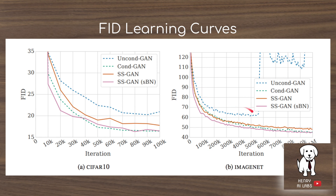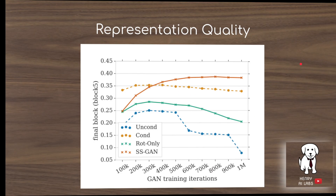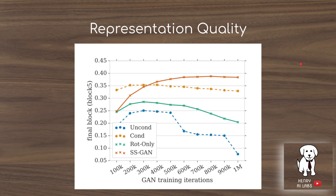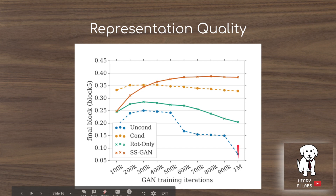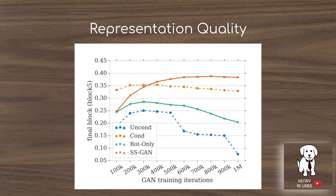On ImageNet you can see how the unconditional GAN collapses — a failure mode resulting in a very high FID score. The rotation quality results show that when you train the GAN and take the discriminator's visual representations to train a classifier, the rotation-only self-supervised approach gets about 20% accuracy, while unconditional does poorly. The conditional GAN doesn't perform as well as the self-supervised GAN for representation quality, which may be the most important application of GANs — unsupervised learning for classifiers, object detectors, and other computer vision tasks.